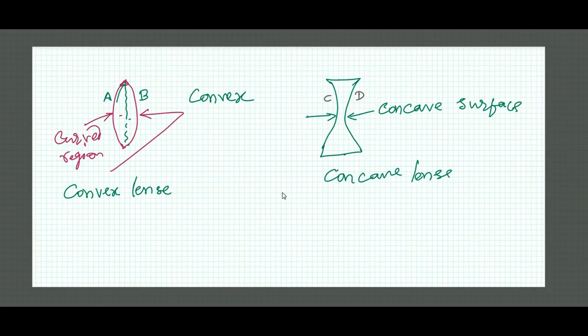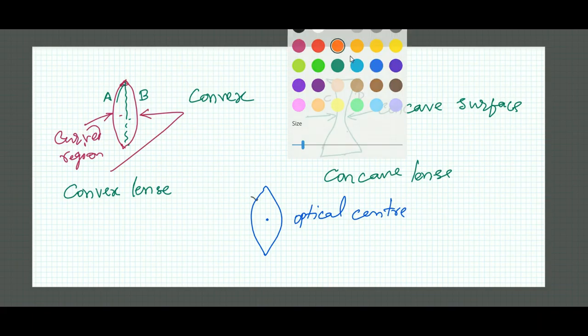I first want to know about the convex lens. Suppose I am drawing a convex lens again here. Now convex lens has a center point which is called optical center. So what is the characteristic of this optical center?